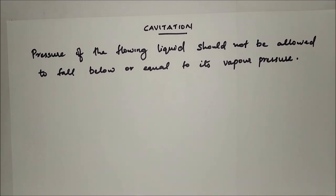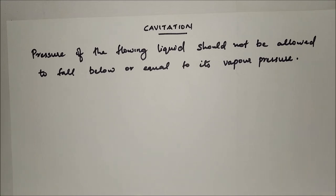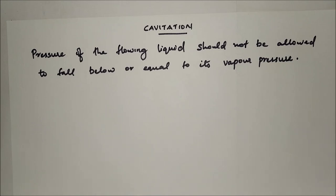The effects of cavitation are: the metallic surfaces are damaged and cavities are formed on the surfaces. Due to sudden collapse of vapor bubbles, considerable noise and vibrations are produced. The efficiency of the turbine decreases due to cavitation because the force exerted by water on the turbine blade decreases, and the work done by water or output horsepower becomes less, hence efficiency decreases. The hydraulic machines subjected to cavitation are reaction turbines and centrifugal pumps.